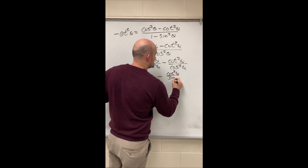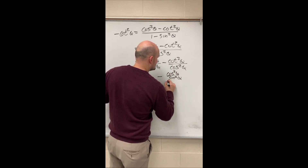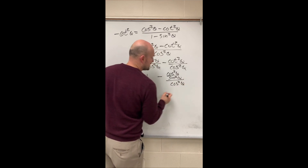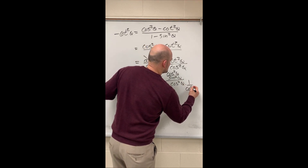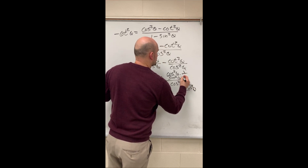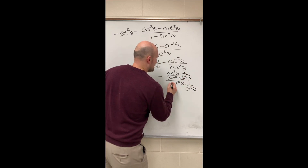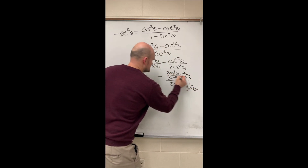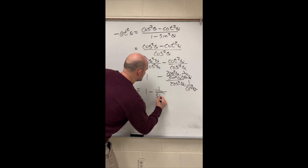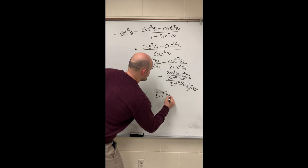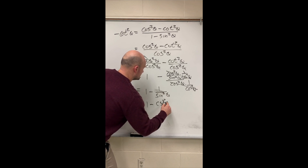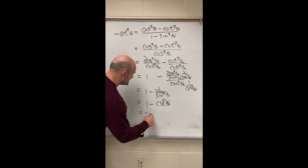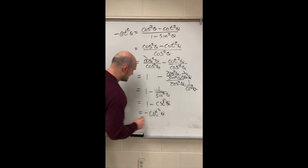Let's rewrite in terms of cosines and sines. That's cosine squared of theta over sine squared of theta, divided by cosine squared of theta. Multiplying by 1 over cosine squared of theta, we're left with 1 over sine squared of theta, which is equal to cosecant squared of theta minus 1, which equals negative cotangent squared of theta.